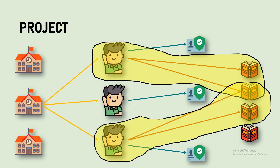Now let's discuss the many-to-many relationship. If you look at the relationship between students and subjects, one student can have n number of subjects and one subject can have n number of students. For example, subject 2 is used by two students, and those two students share the same subject — that is a many-to-many relationship.